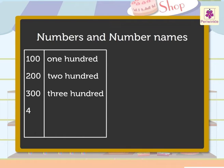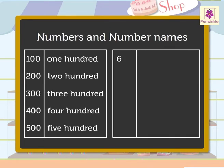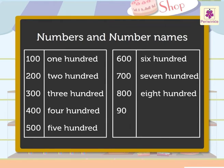Four hundred, 500 — five hundred, 600 — six hundred, 700 — seven hundred, 800 — eight hundred, 900 — nine hundred.